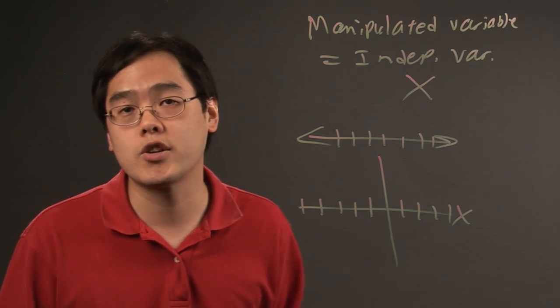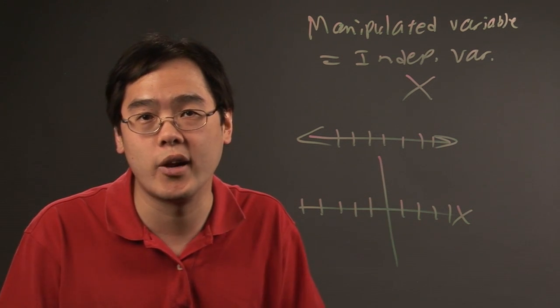So I'm Jimmy Chang and that answers the question, what axis does the manipulated variable go on in a line graph?